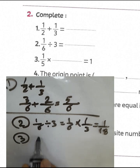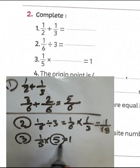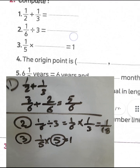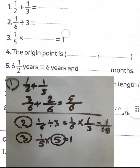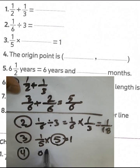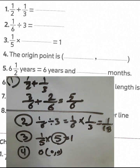Question number 3: 1 over 5 divided by 5, the result will be 1 over 25. Question number 4: the original point is 0 and 0. The coordinates of the origin are (0, 0).